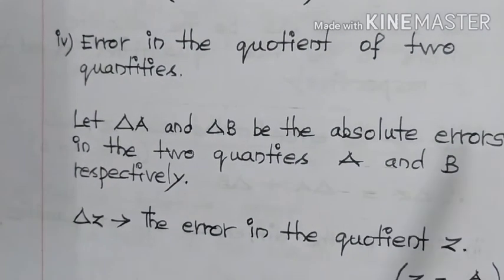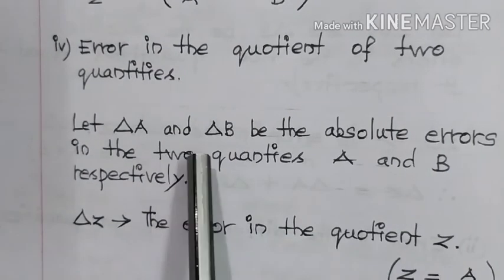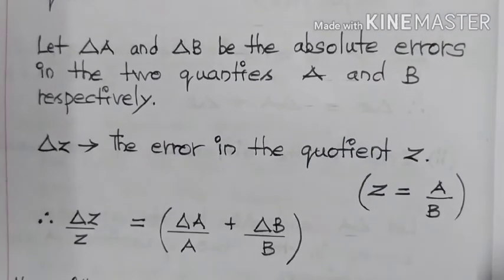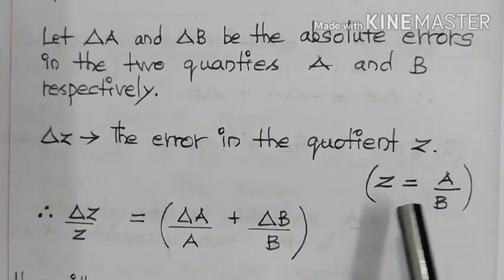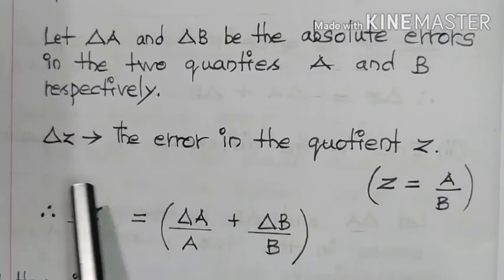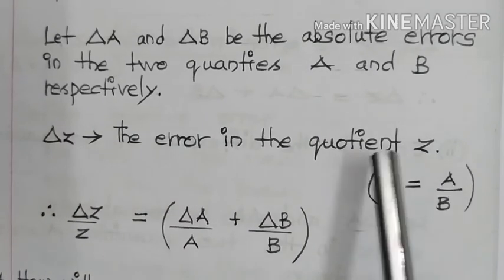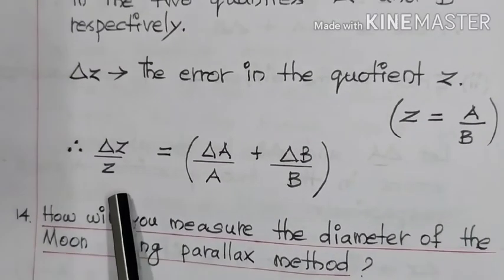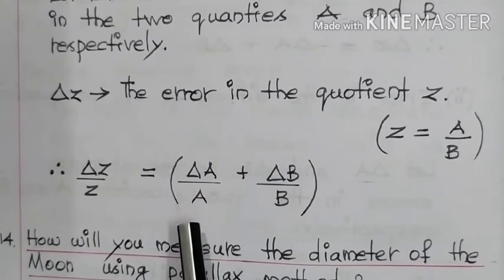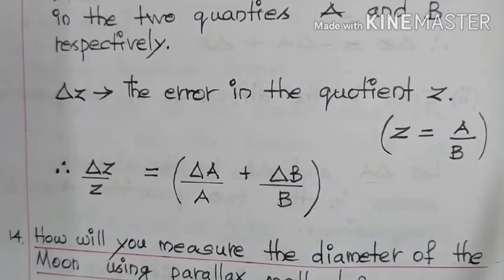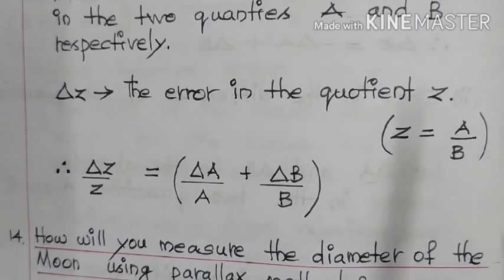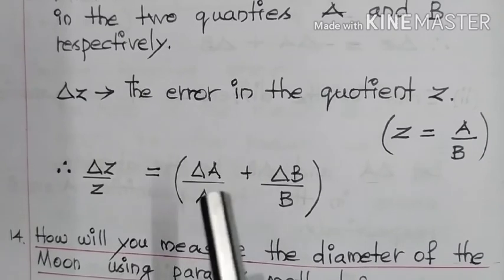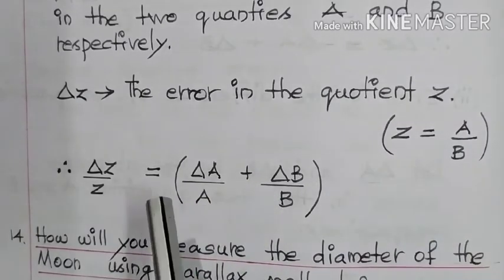Error in the quotient of two quantities. Let delta A and delta B be the absolute errors in the two quantities A and B respectively. Here Z is equal to A divided by B, and delta Z is the error in the quotient Z. The expression is: delta Z by Z is equal to delta A by A plus delta B by B. Here also, for both product and quotient, the expressions are one and the same — they look alike.